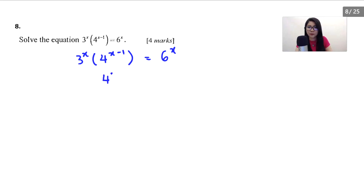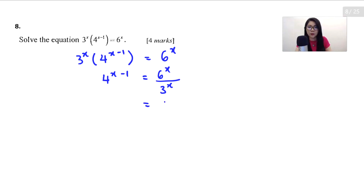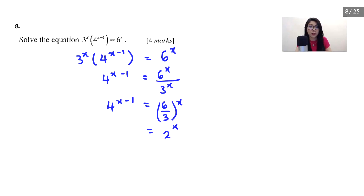I'm going to bring 3^x over to the right-hand side, giving 4^(x−1) equals 6^x over 3^x. Since the powers are the same, we can simplify: 6 divided by 3 is 2, so the right-hand side becomes 2^x. On the left-hand side, 4 can be changed to base 2 — so it becomes 2 squared, bracket (x−1).